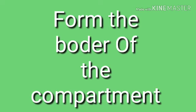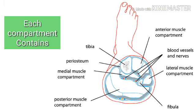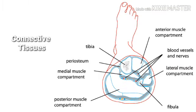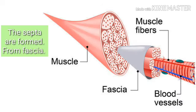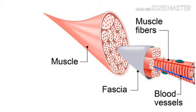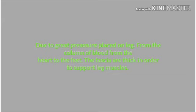The interosseous membrane and the septa form the borders of the compartments: the anterior intermuscular septum, the transverse intermuscular septum, and the posterior intermuscular septum. Each compartment contains connective tissues, nerves, and blood vessels. The septa are formed from fascia, which is made up of a strong type of connective tissue. The fascia also separates the skeletal muscles from the subcutaneous tissue.